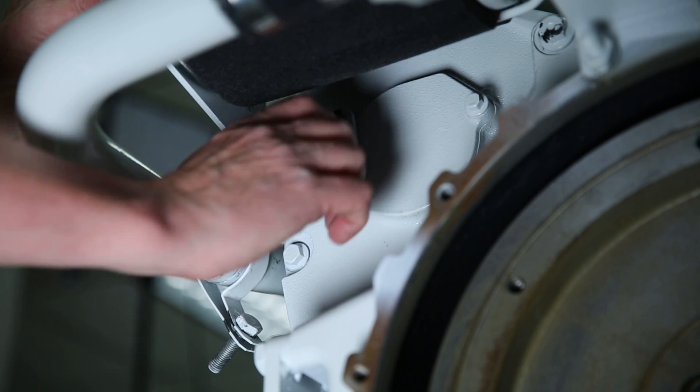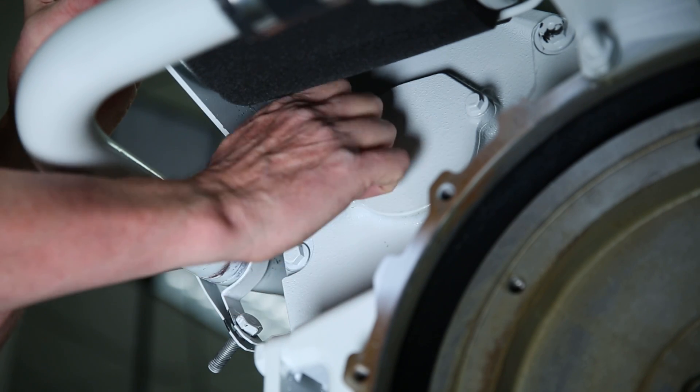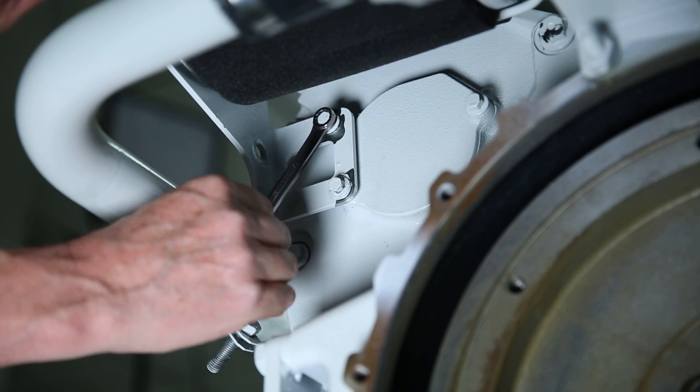Align the mounting bracket holes with the engine block. Secure the mounting bracket to the engine block with two screws. After all the mounting hardware is installed, tighten them securely.